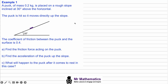In Example 1, a puck of mass 0.2 kilograms is placed on a rough slope inclined at 30 degrees above the horizontal. The puck is hit so it moves directly up the slope. The coefficient of friction between the puck and the surface is 0.4.